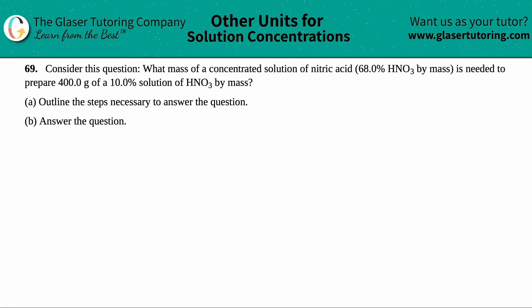Number 69. Consider this question: what mass of a concentrated solution of nitric acid, which is 68.0 percent HNO3 by mass, is needed to prepare 400.0 grams of a 10.0 percent solution of HNO3 by mass? Letter A says we need to outline the steps necessary to answer the question, and then letter B we have to answer the question.